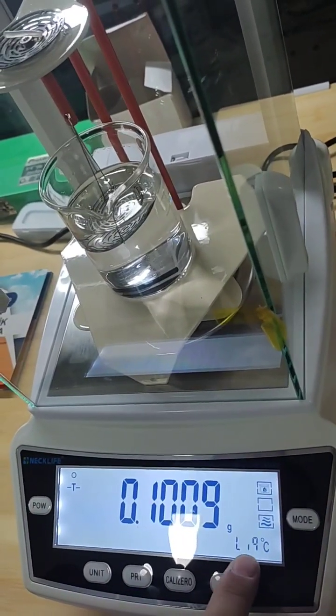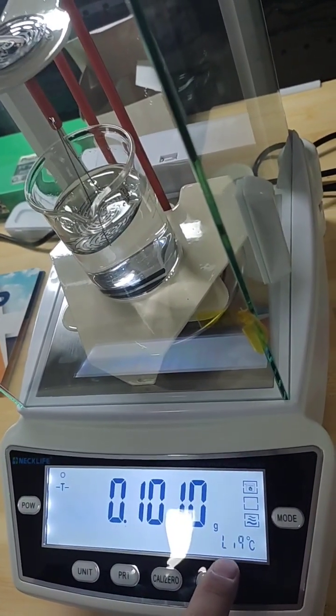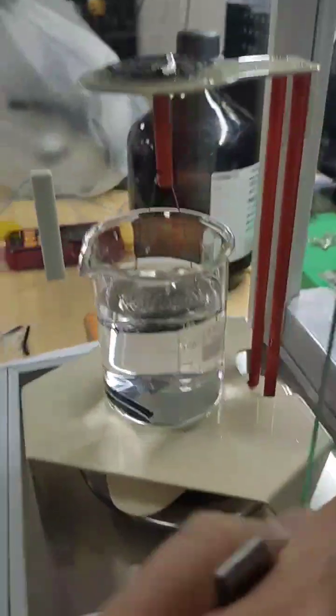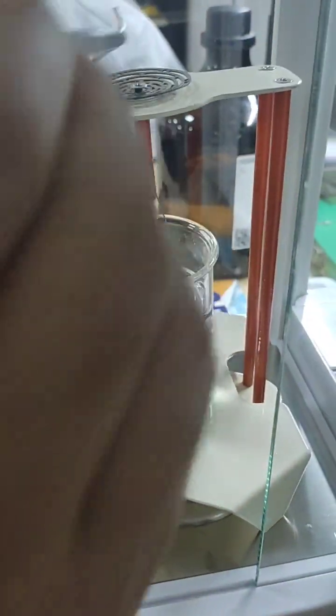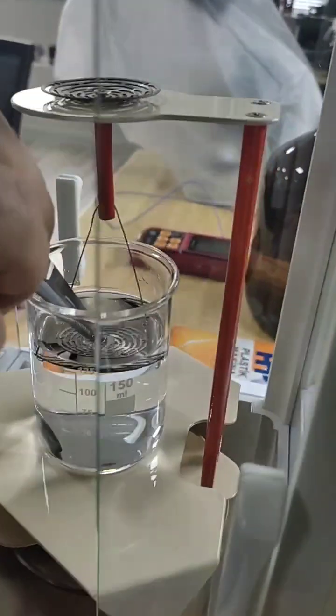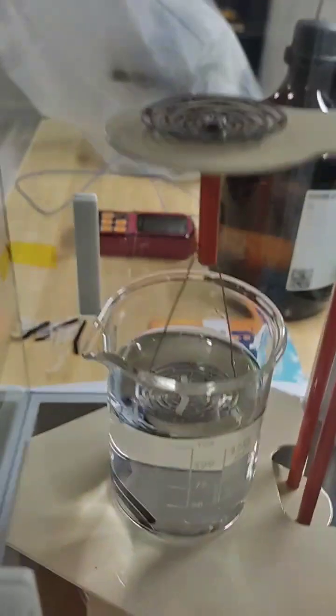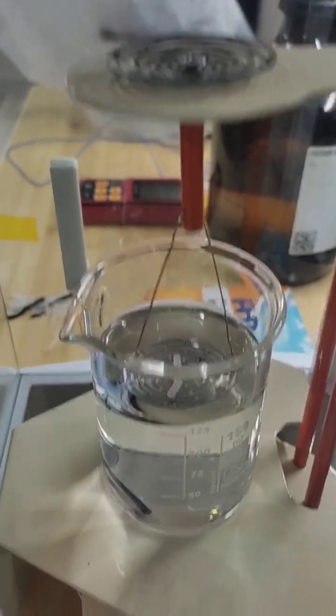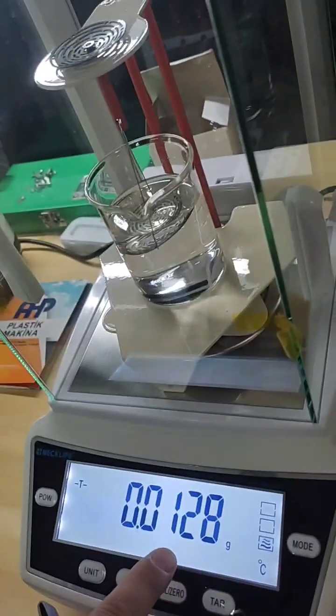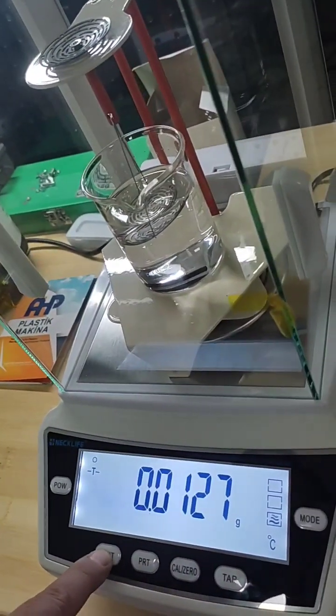Now it shows liquid blinking. LIQ is blinking here. Then you need to move the sample piece to liquid. Like this. After the digit is stabilized, you can click on unit.